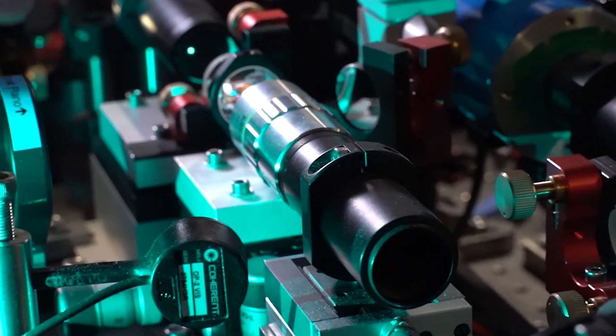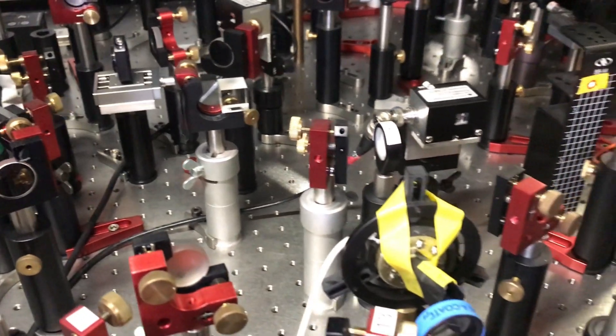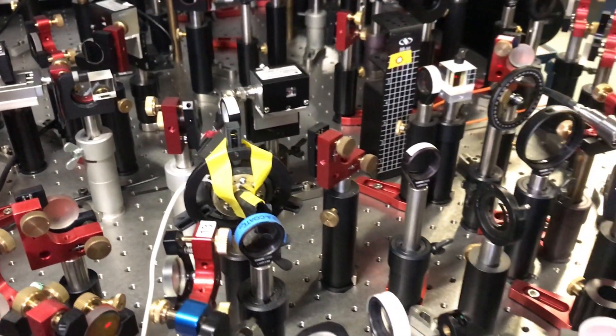At large photon numbers, a Bose-Einstein condensate of photons emerges. The basis for our observation is the openness of the system, which we can control extremely well.